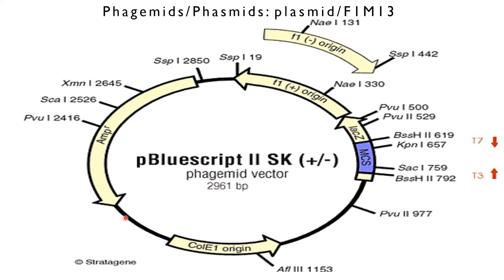The helper phage infects the bacterial host by first attaching to the host cell pilus, and then after attachment transporting the phage genome into the cytoplasm of the host cell. Inside the cell, the phage genome triggers production of single stranded phagemid DNA in the cytoplasm. This phagemid DNA is then packaged into phagemid particles.